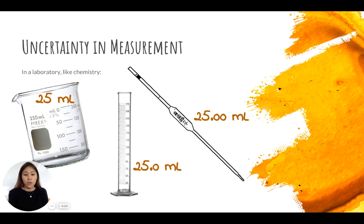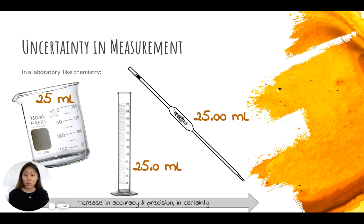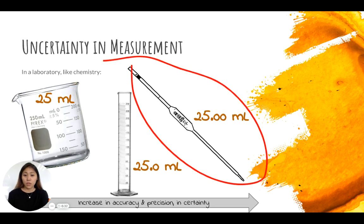So when we're talking about uncertainties and measurements, we could see that in chemistry labs using three pieces of glassware, we could measure distilled water in three different ways, in three very different accuracy and precise ways. In this case, the most accurate and the most precise instrument to use to measure 25 milliliters of distilled water would be the volumetric pipette.